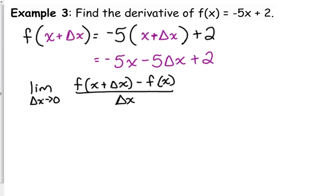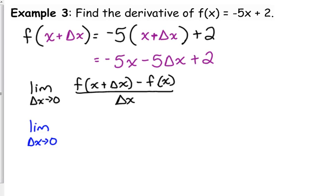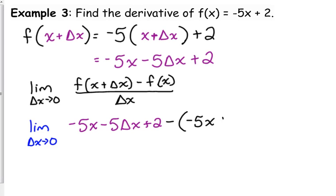Now I'm going to plug in my specific pieces. The limit as Δx approaches 0: f(x + Δx) equals negative 5x minus 5Δx plus 2, minus my original f(x) function, which is negative 5x + 2, all over Δx.